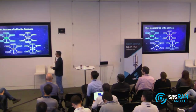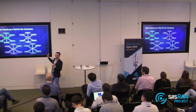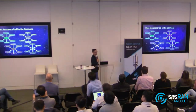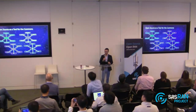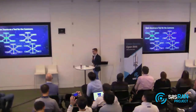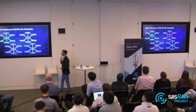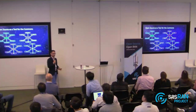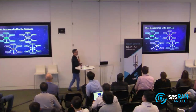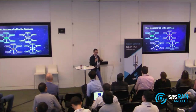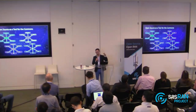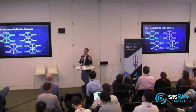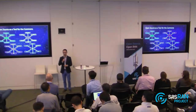This is true for every successful open source project. Every open source project that has achieved success has done so because they understand their ecosystem. The RISC-V ecosystem is different from the Linux ecosystem, which is different from the SBOM ecosystem, which is different from Kubernetes. They all have different stakeholders, communities, and customers. But the critical thing about all of them is that in each ecosystem, every player needs their competitors to solve the same problem in the same way — and they need everybody else in the ecosystem to do the same. It's the only way it works.